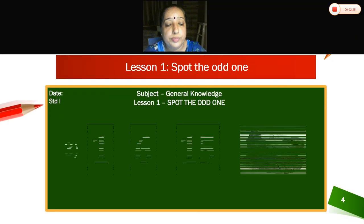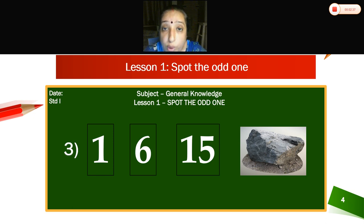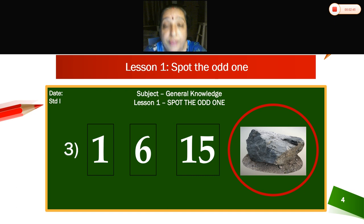Third one. Now what can you see here? Numbers: one, six, fifteen, and stone. Children, which is the odd one here? Stone. Because one, six, and fifteen are numbers. So we will circle stone.